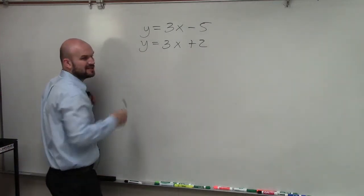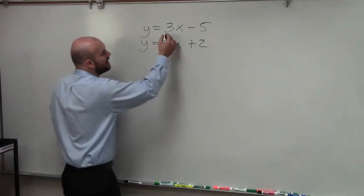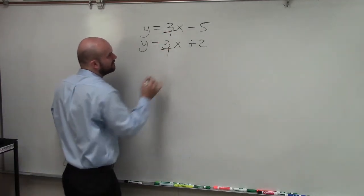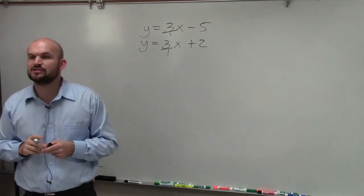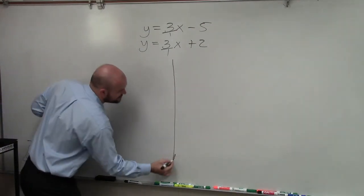So here, I have two equations that are much easier to graph, right? They're already in slope-intercept form. Now, I did tell you guys to make sure you write the slopes as fractions. But let's go and graph these real quick so we can visualize what we have here.